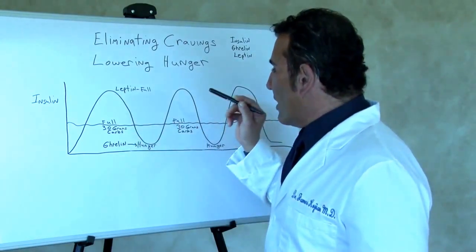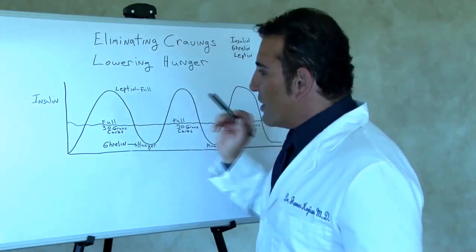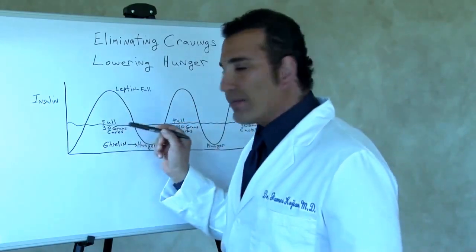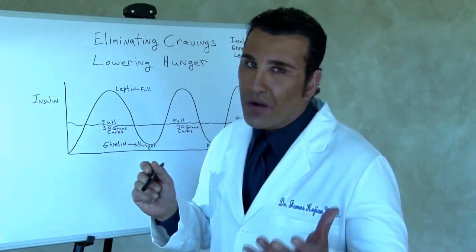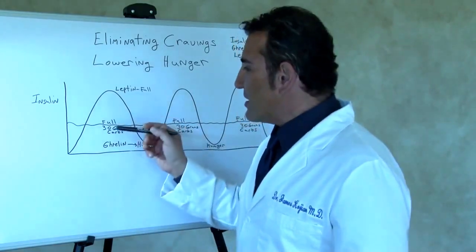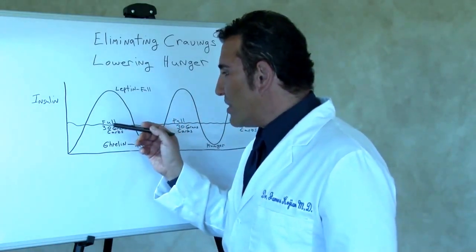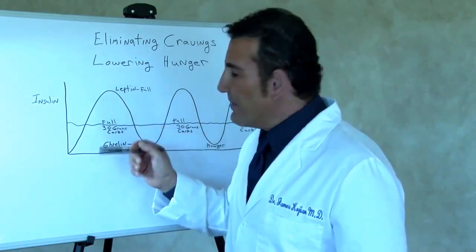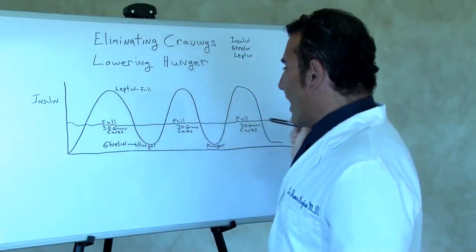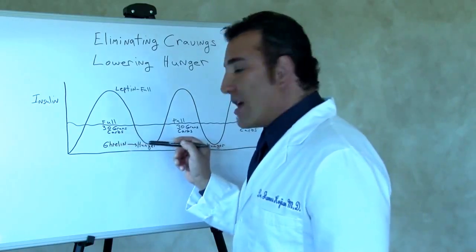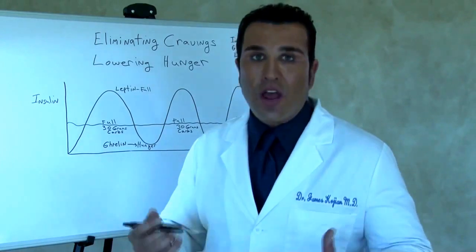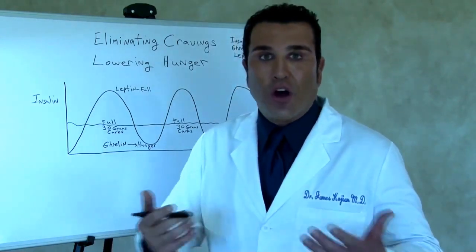So if you're eating 30 gram carb meals a day for breakfast, for lunch, and for dinner, your insulin level will stay flat because 30 grams of carbs is a low amount of carbohydrate. This is eggs and cottage cheese and high protein, low carb meals. The insulin level stays flat, ghrelin is not secreted, and so you don't have food cravings, you don't have carb cravings, you don't have hunger.